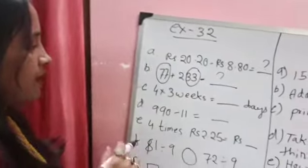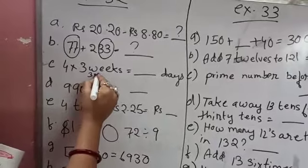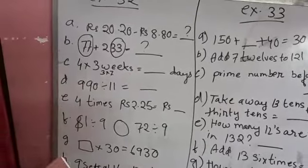Now 4 into 3 weeks. 3 weeks, you know what it is. 3 weeks into 3 into 7. 3 sevens are 21. 21 again you have to multiply with 4.